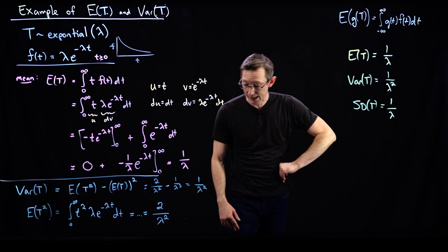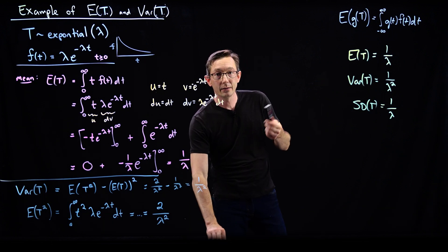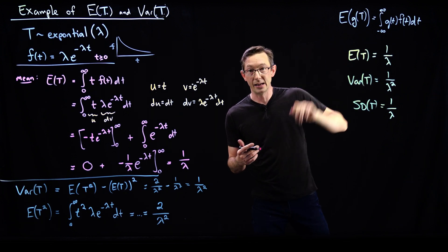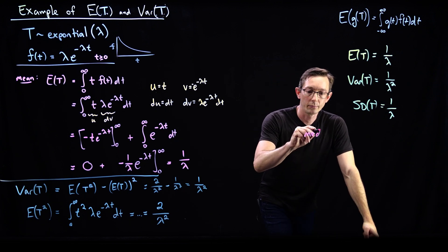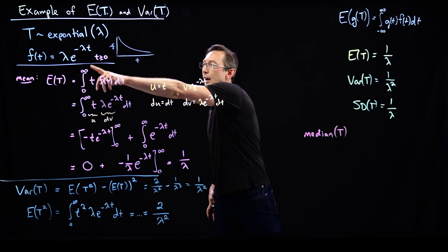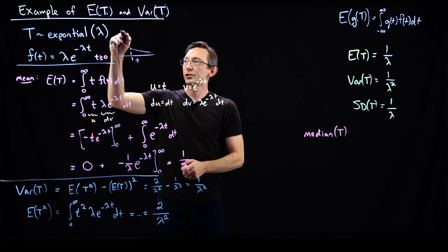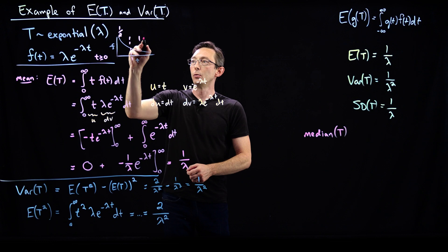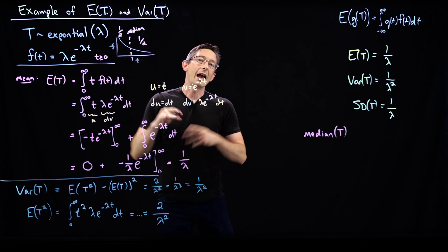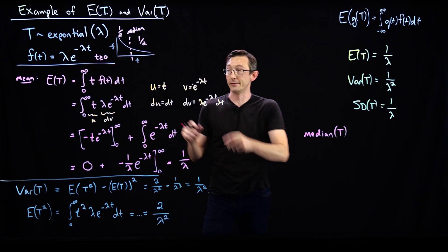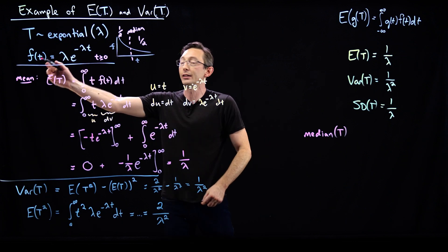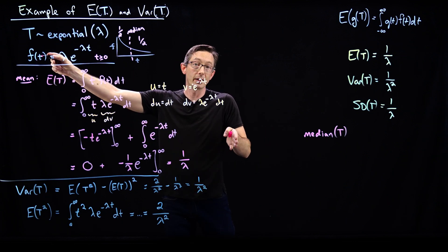One last quantity that is quite important is the median. The median value — a robust cousin of the expected value — is the value of little t such that half the weight of the distribution is on the left and half is on the right. The way you find the median is by finding the cumulative density function and the point where the cumulative density equals one half.